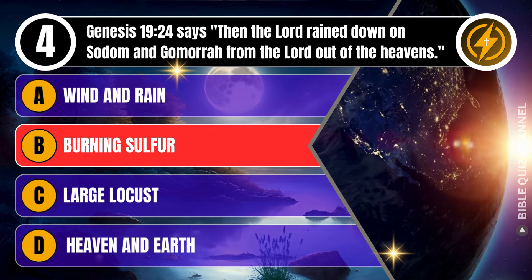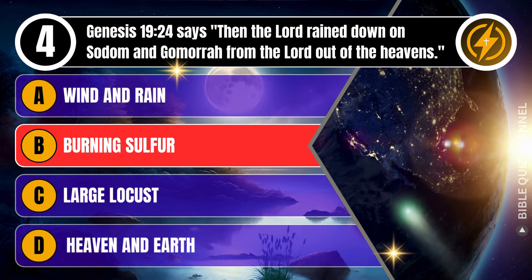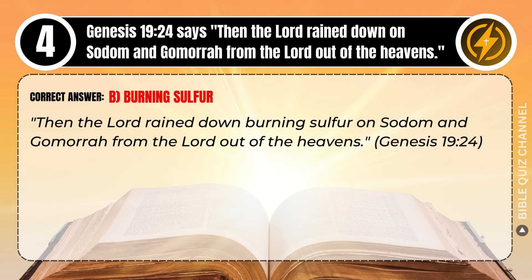Correct answer: B. Burning sulfur. Explaining the Bible — Then the Lord rained down burning sulfur on Sodom and Gomorrah from the Lord out of the heavens. Genesis, chapter 19, verse 24.